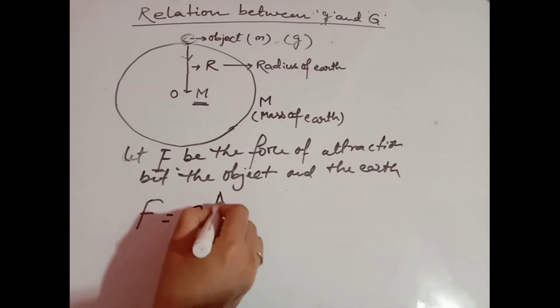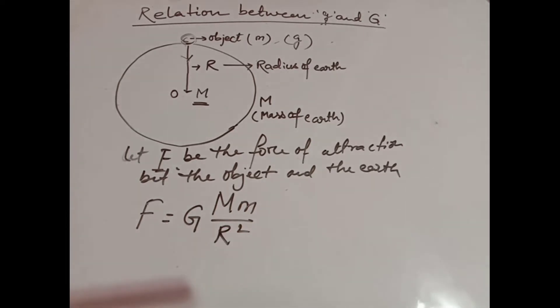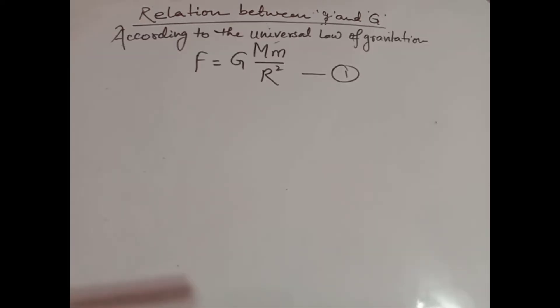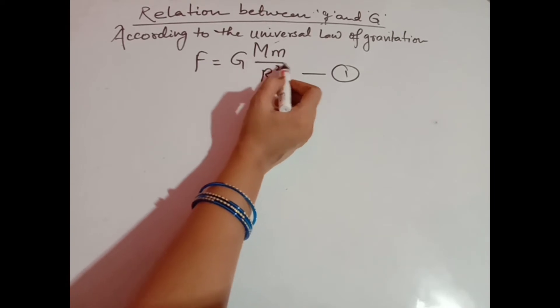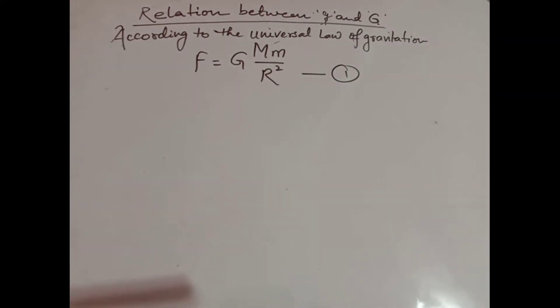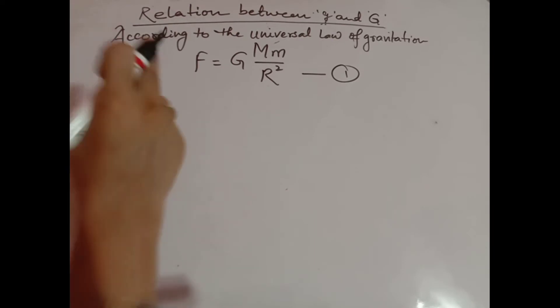We know according to universal law of gravitation, F is equal to G times M times m divided by R square. This is the universal law of gravitation: F = GMm/R².